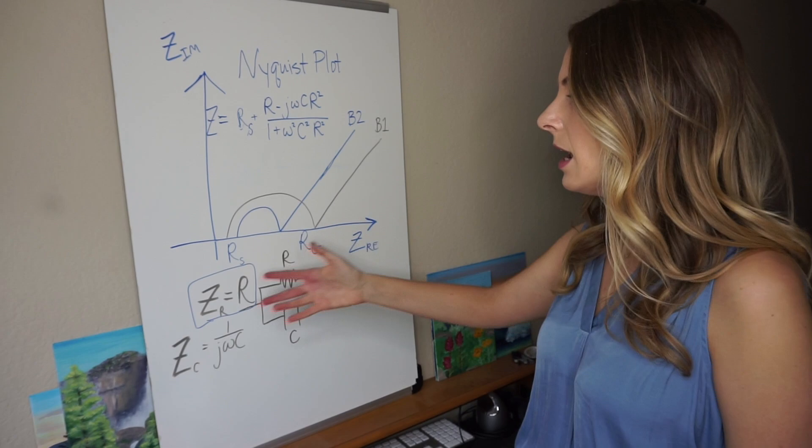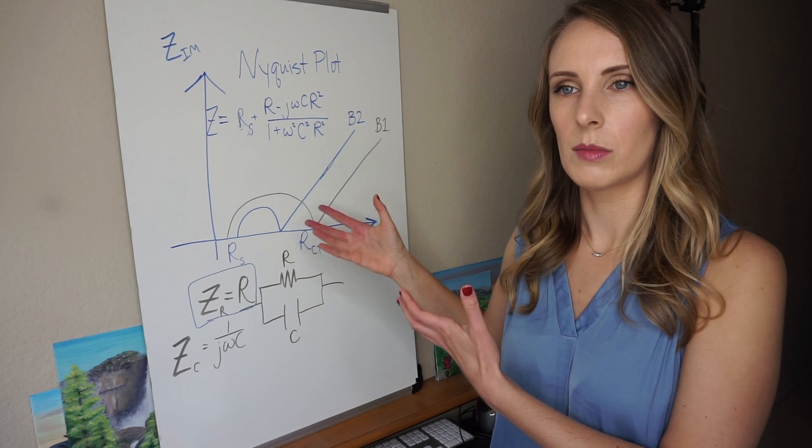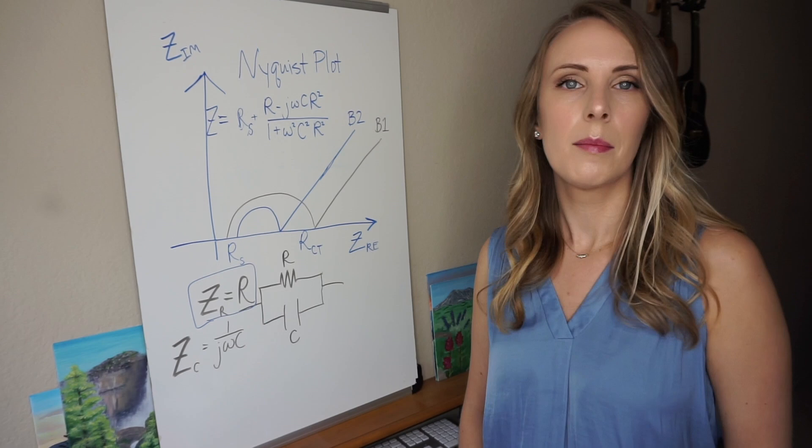So this is basically it. This is a Nyquist plot. This is what you typically get from EIS when you're plotting a battery. And these are some things to think about when you're investigating why you get this impedance curve, relating it to circuit elements, the equivalent circuit.